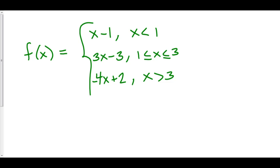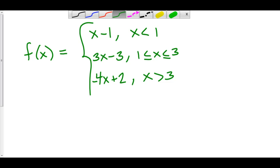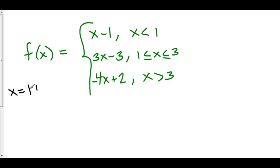Let's take a look at one more. Here we have two Frankenstein points: one at x equals 1 and one at x equals 3. To the left of 1 we're using x minus 1; from 1 to 3 we're using 3x minus 3; and to the right of 3 we're using negative 4x plus 2. All three functions by themselves are continuous, so we check the Frankenstein points to see if anything weird happens when we put them together.